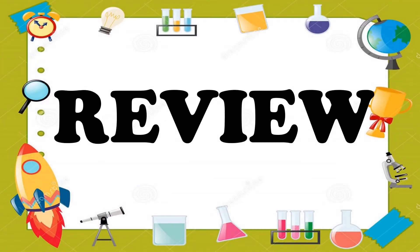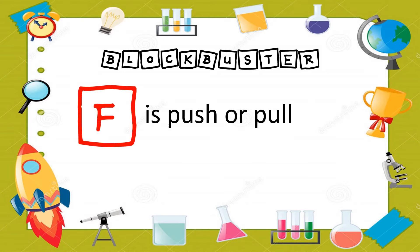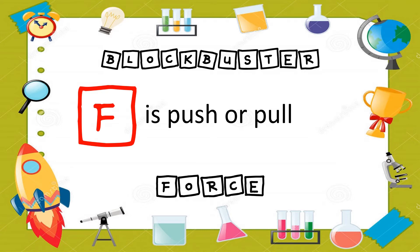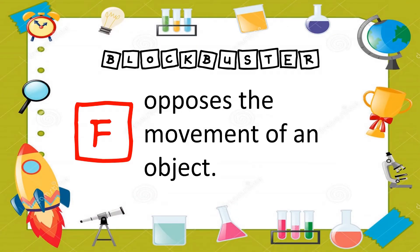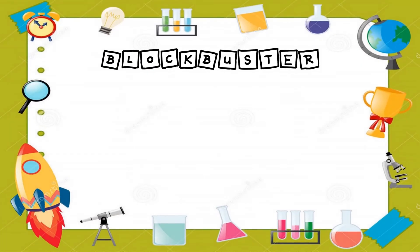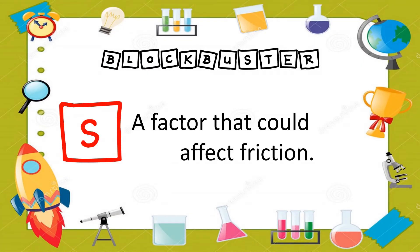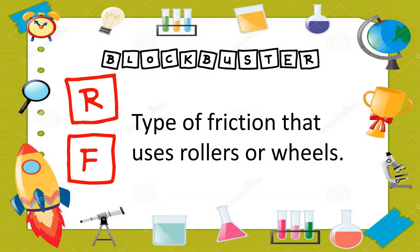Are you ready? Answer the Blockbuster: What if is push or pull? Force. What if opposes the movement of an object? Friction. You're right! What if is a factor that could affect friction? Surface. What RF is a type of friction that uses roller or wheels? Rolling friction.